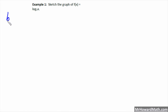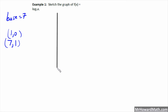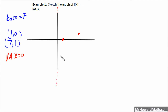Example 1: sketch the graph of log base 7 of x. The base is 7, so we have the points (1, 0) and (base, 1), which is (7, 1). There's also a vertical asymptote of x equals 0 — a vertical line right on top of the y-axis. So we plot (7, 1) out here and (1, 0) here, and the graph looks like this. We always have (1, 0) and (base, 1) when we work with logarithms.